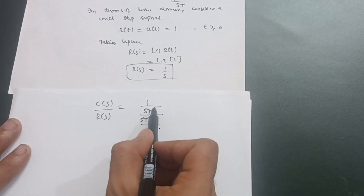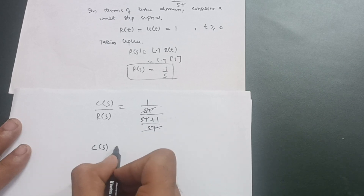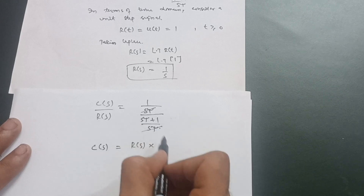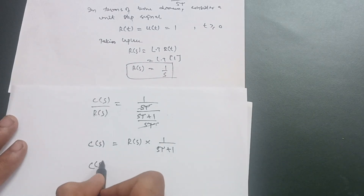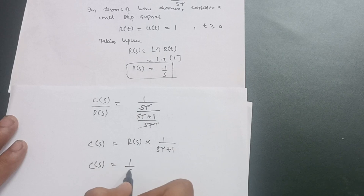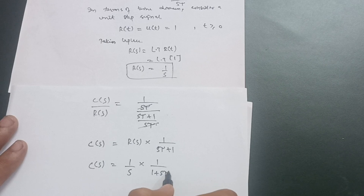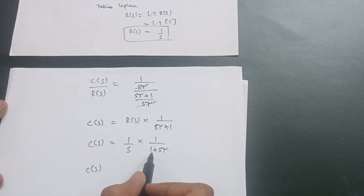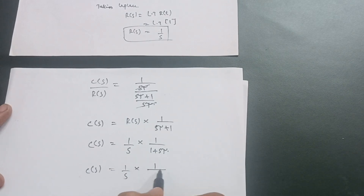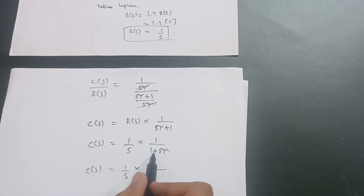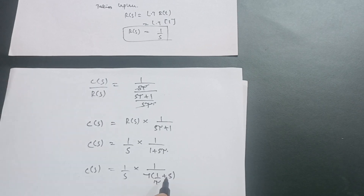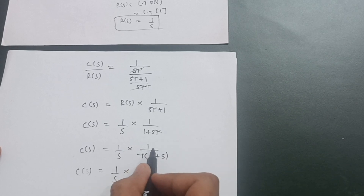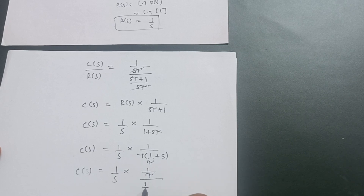Taking τ as common from the denominator term, we get C(S) = (1/S) × (1/τ) / (1/τ + S). Sending τ to the numerator gives C(S) = (1/S) × (1/τ) / (S + 1/τ).